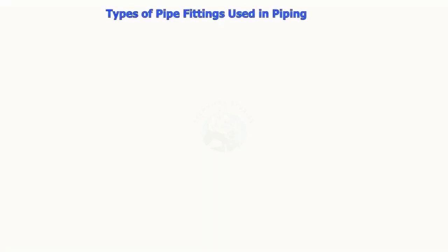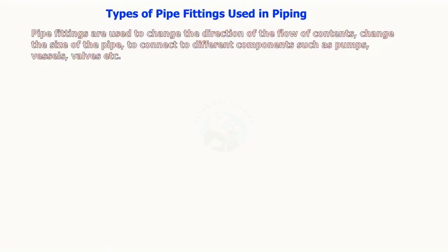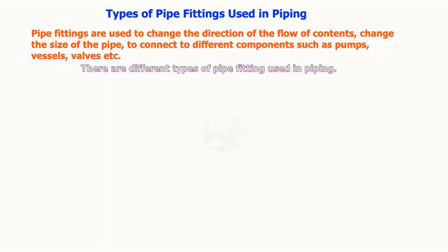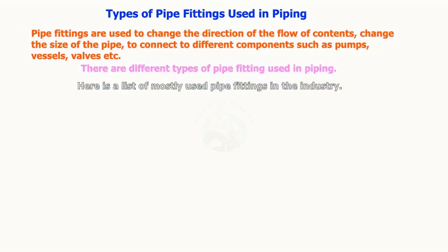Types of pipe fittings used in piping. Pipe fittings are used to change the direction of the flow of contents, change the size of the pipe, and to connect to different components such as pumps, vessels, valves, etc. There are different types of fittings used in piping. Here is a list of mostly used pipe fittings in the industry.